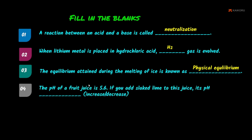Fourth: the pH of a fruit juice is 5.6. If you add slaked lime to this juice, its pH value increases or decreases? The fruit juice is acidic. Slaked lime, which is calcium hydroxide, is basic in nature. Adding a base to an acidic solution increases its pH. The answer is increases.